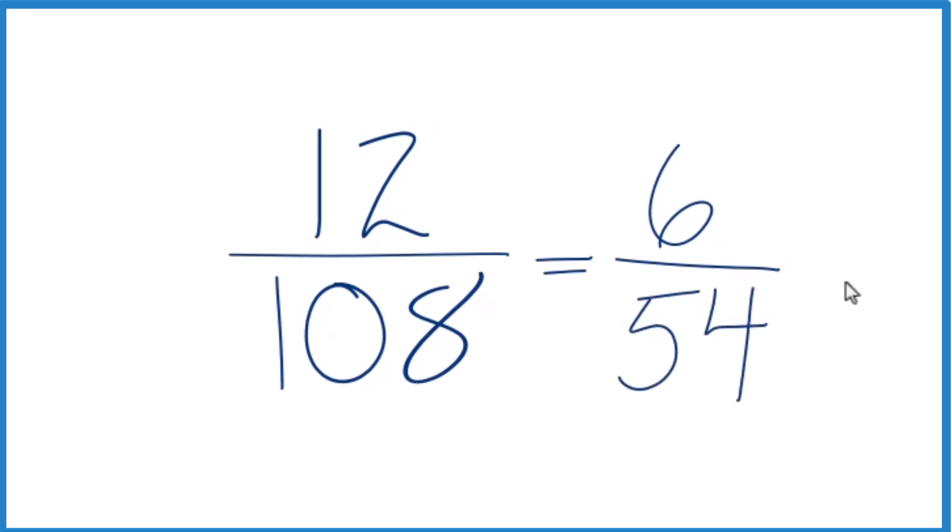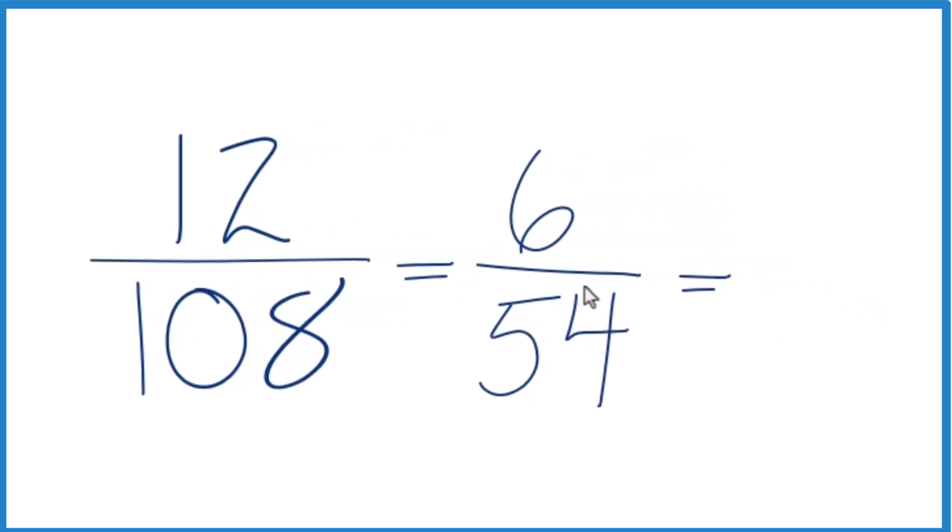And since these are even numbers, we can do that again. We can divide both by 2. 6 divided by 2 is 3. 54 divided by 2 is 27.